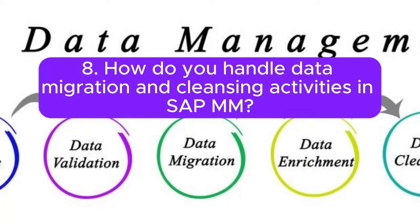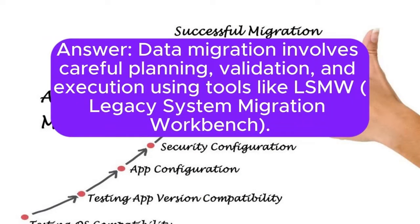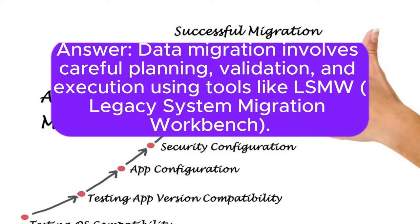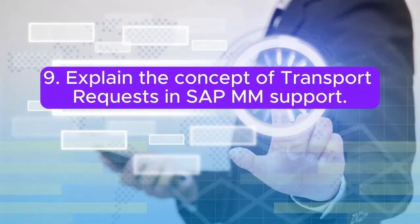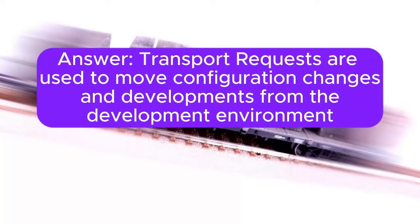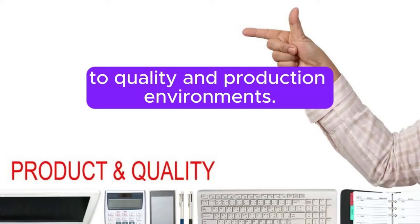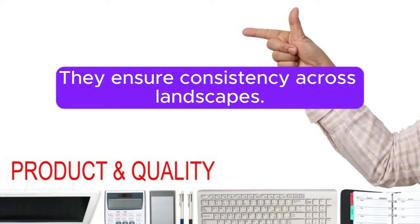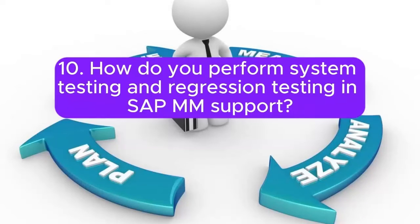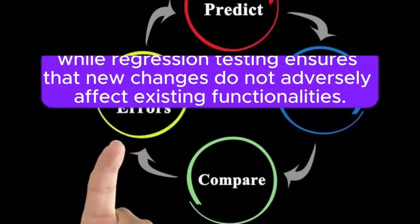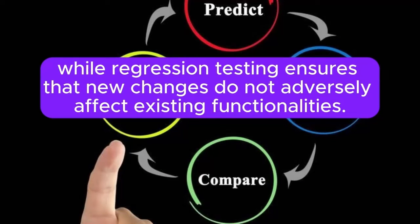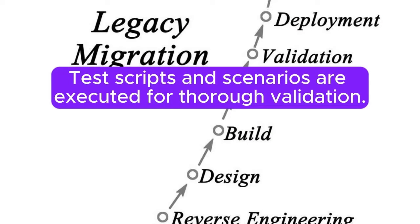Question 8: How do you handle data migration and cleansing activities in SAP MM? Data migration involves careful planning, validation, and execution using tools like LSMW (Legacy System Migration Workbench). Data cleansing includes identifying and rectifying data inconsistencies. Question 9: Explain the concept of transport requests in SAP MM support. Transport requests are used to move configuration changes and developments from the development environment to quality and production environments. Question 10: How do you perform system testing and regression testing in SAP MM support? System testing involves validating end-to-end processes, while regression testing ensures that new changes do not adversely affect existing functionalities. Test scripts and scenarios are executed for thorough validation.